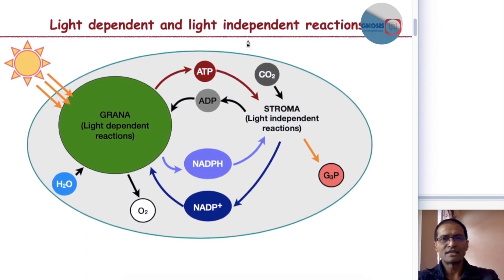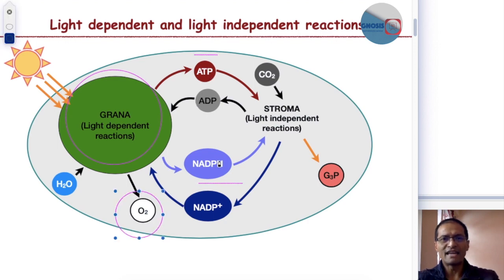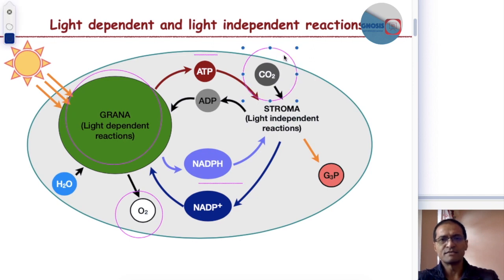Looking at this image, we can see that the light-dependent reactions of photosynthesis generate ATP, NADPH, and oxygen. This ATP and NADPH then enter into the light-independent reaction, where carbon dioxide is assimilated to give you your sugars.